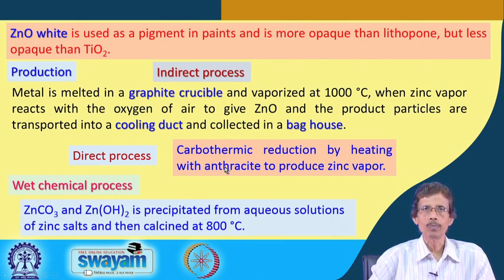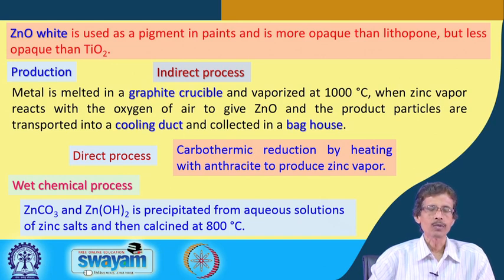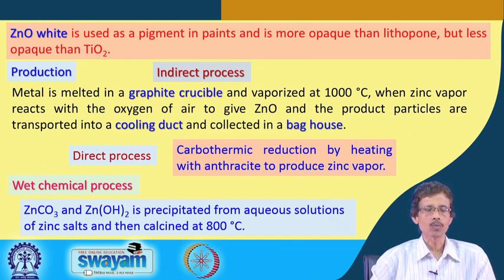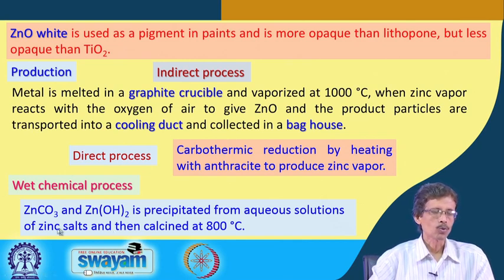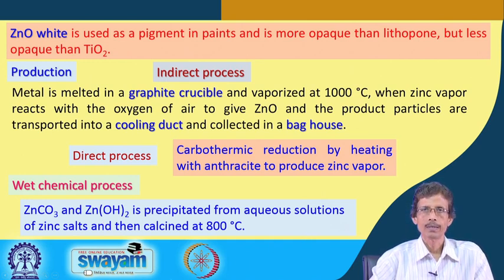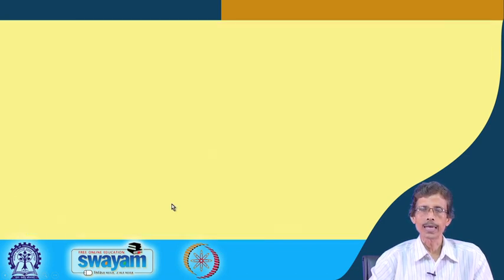The wet chemical process uses typical inorganic compounds readily available as ores or from scrap zinc metal. Zinc carbonate and zinc hydroxide can be precipitated from aqueous solutions of any zinc salt — such as zinc chloride — as they are insoluble in water. When burned at 800 degrees centigrade, we get zinc oxide as the pigment.